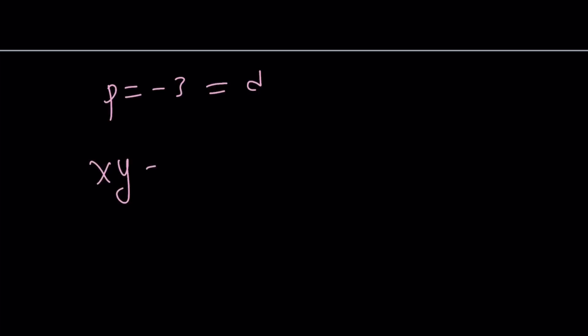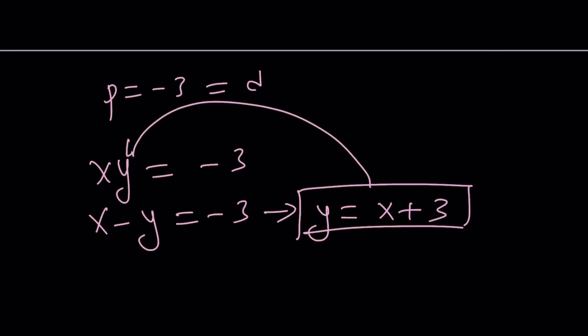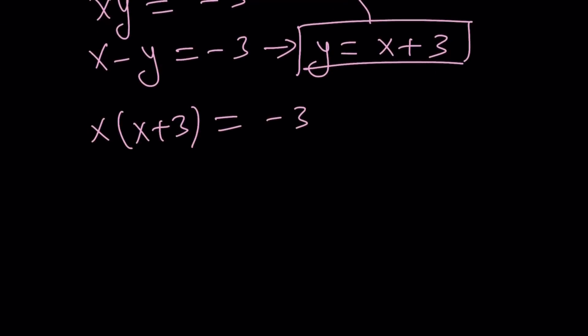What about the other equation? p equals negative 3 and d equals negative 3. So p is the product, remember? xy is negative 3 and x minus y is negative 3. Again, let's write this as a quadratic equation. If you isolate y, you get y equals x plus 3 from the second equation. And go ahead and plug that in: x times x plus 3 equals negative 3. Is this going to work? Let's find out.